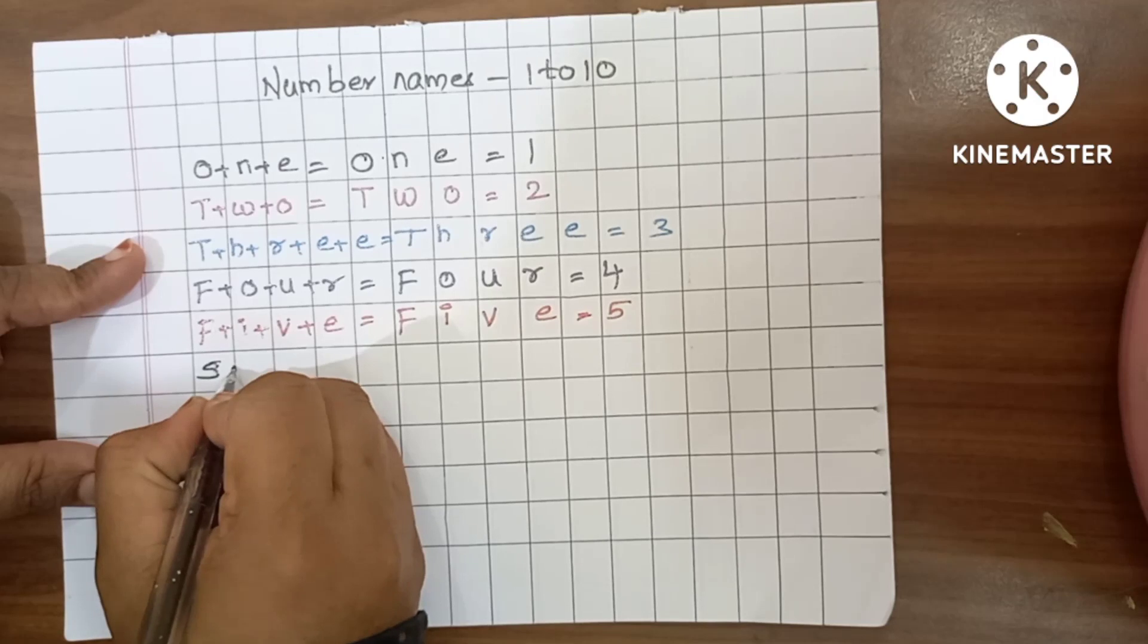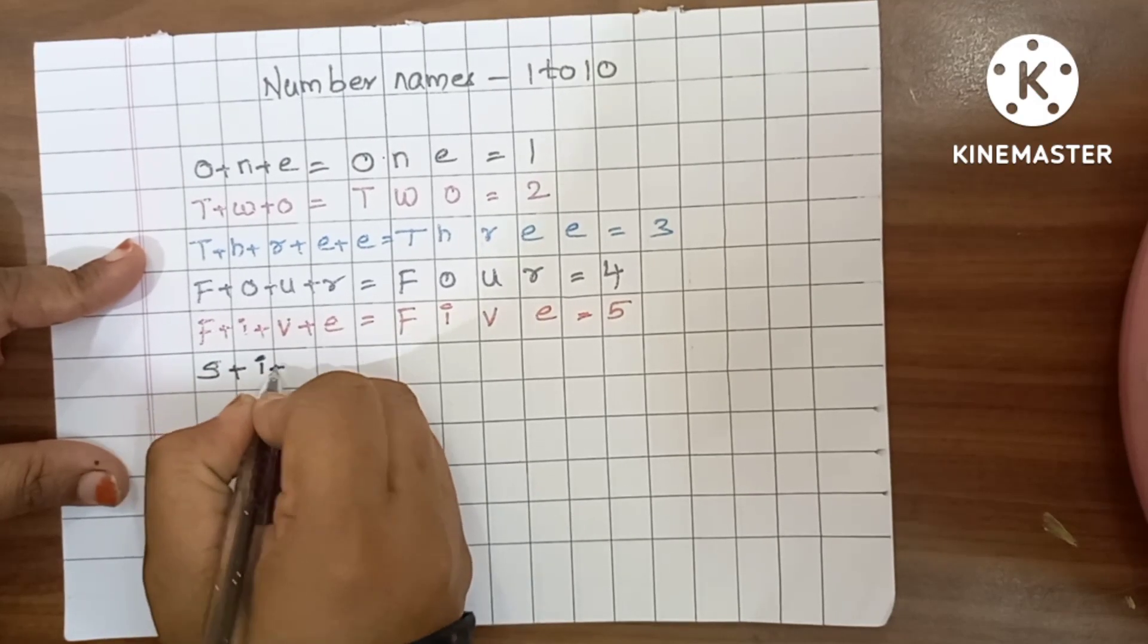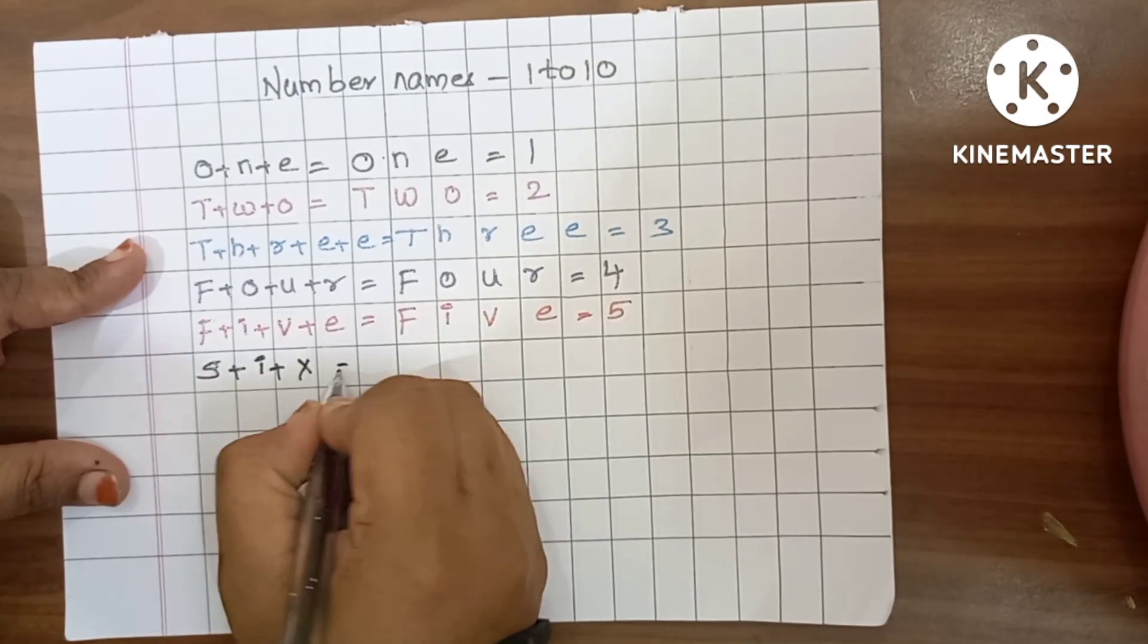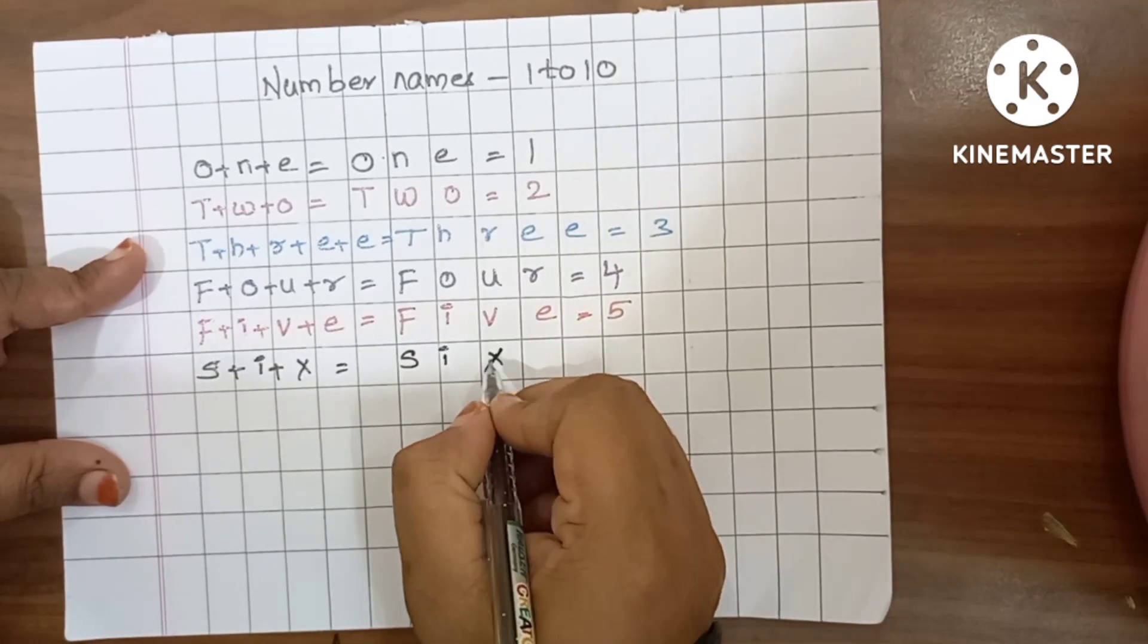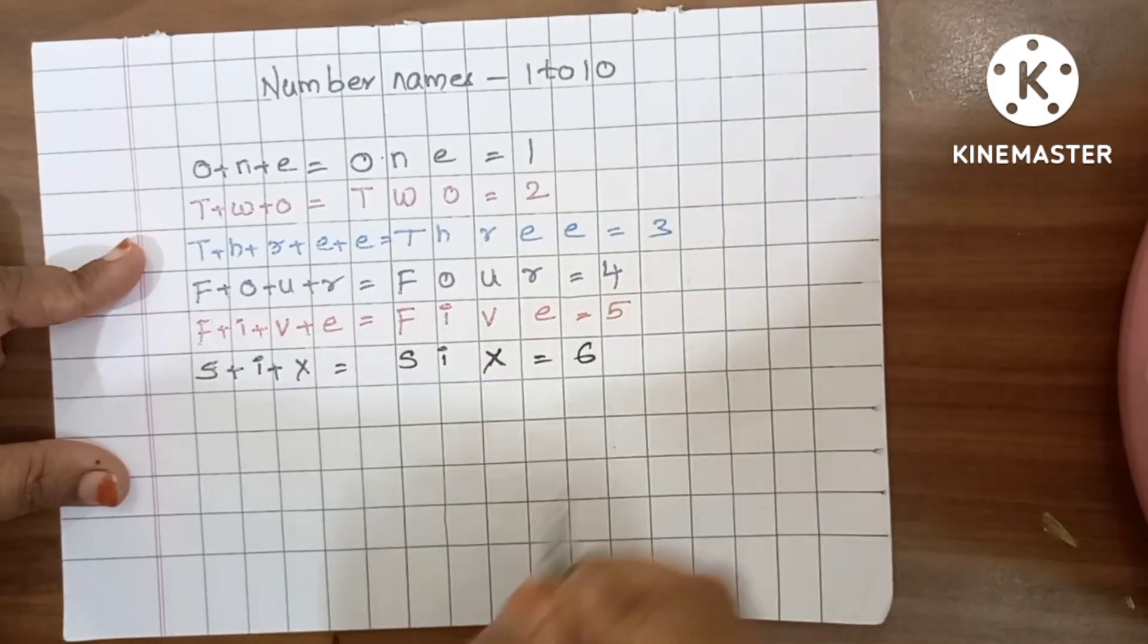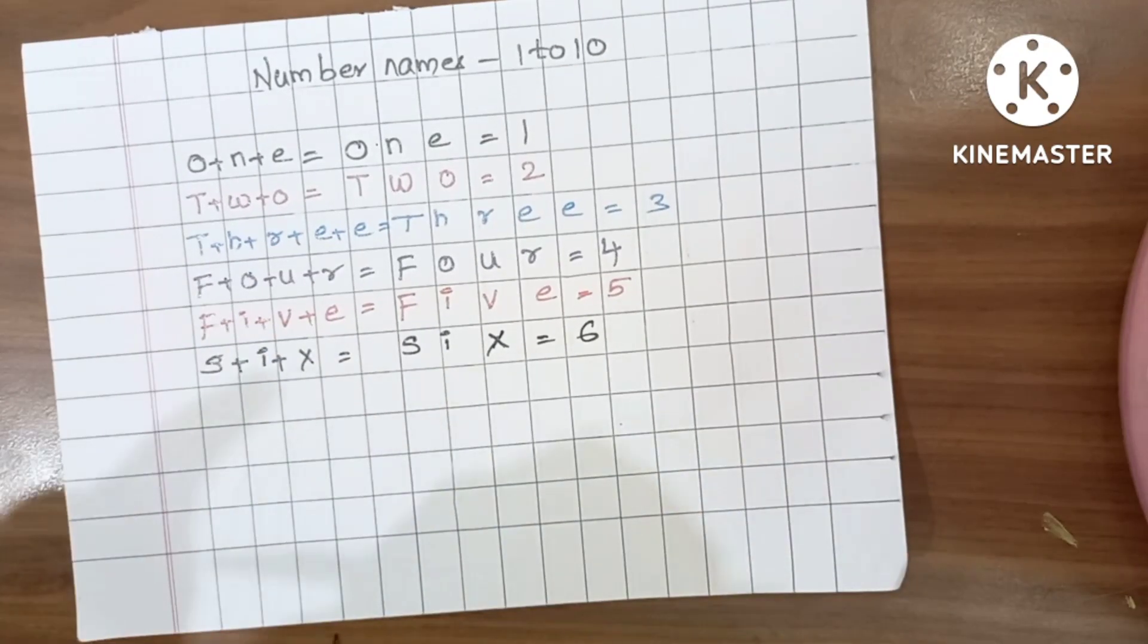S plus I plus X is equals to 6. S, I, X, 6, pink color.